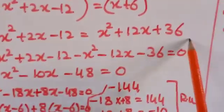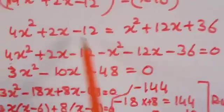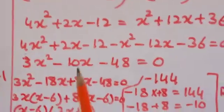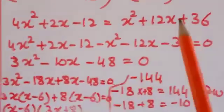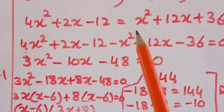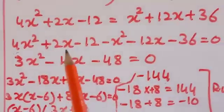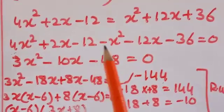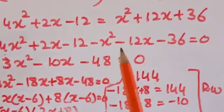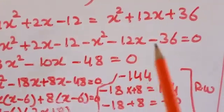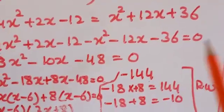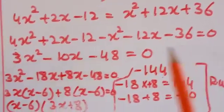So we have 12x + 36. Rearranging, the left side becomes: 4x² + 2x − 12 − x² − 12x − 36 = 0, bringing all terms to one side.